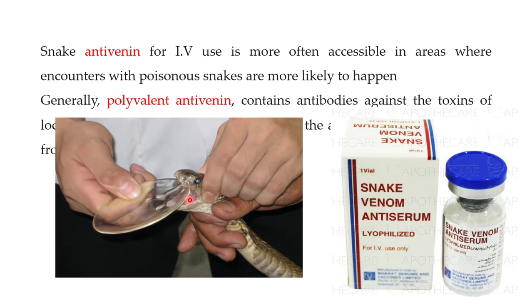This is how these anti-venoms are produced: you collect the venom from the snakes, inject a small amount of it into animals — mostly horses — and from the horses you extract the antibodies, which you can then use as anti-serum against the snake venom.